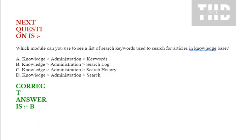Next question: Which module can you use to see a list of search keywords used to search for articles in the knowledge base? Option A: Knowledge administration keywords. Option B: Knowledge administration search log. Option C: Knowledge administration search history. Option D: Knowledge administration search. Correct answer is option B.